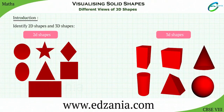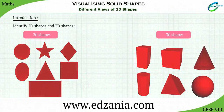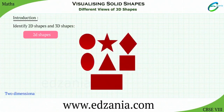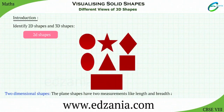2D shapes are plane figures spread over in a single plane and occupy only area. The plane shapes have two measurements like length and breadth. They are called 2D shapes.